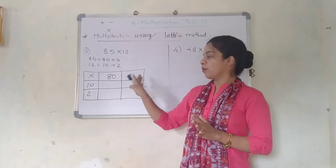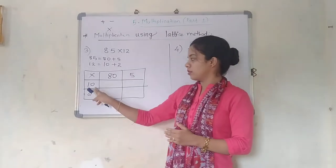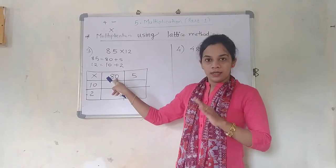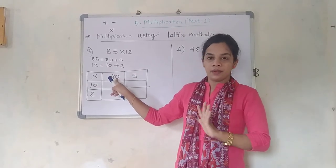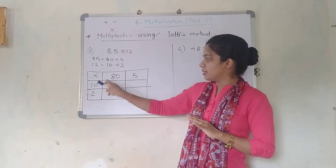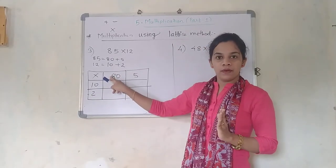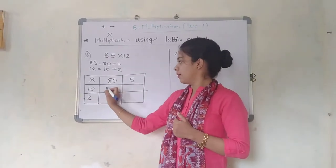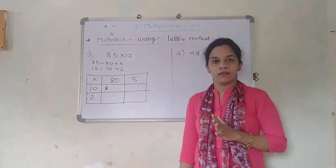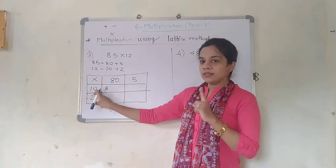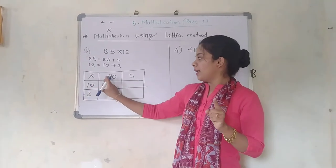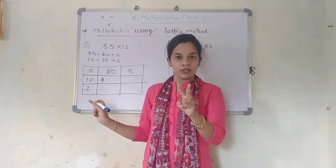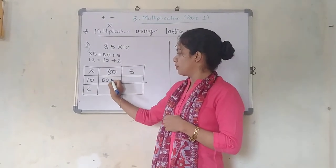We will start by 10. Just focus on these: 10 multiplied by 80. Just see this 1 and this 8 — 1 into 8, what is the answer? 8. Now, 10 is consisting of 1 zero and 80 is consisting of 1 zero — how many total zeros? 2 zeros. So I am going to write 2 zeros over here. 10 into 80, or 10 multiplied by 80, the answer is 800.